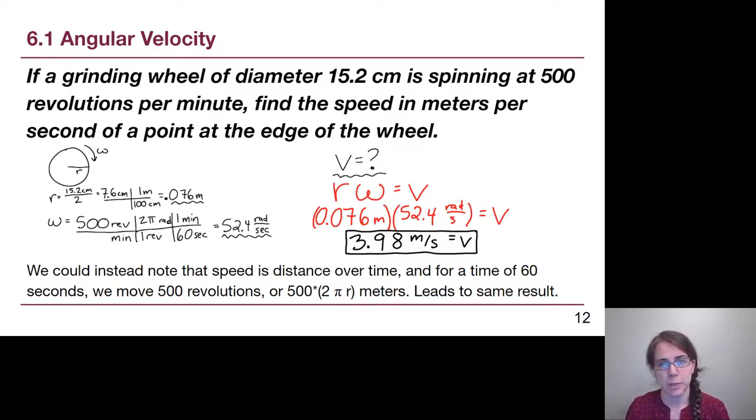In step 6, we check to see if that seems reasonable. That's a pretty slow speed. A grinding wheel could probably handle that. There's a note here at the bottom that it is possible to avoid the idea of radians entirely if we think about each revolution as having a distance of one circumference. That is fine if that makes sense to you.